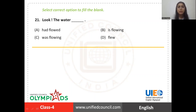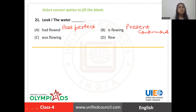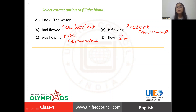Question number 21. The word of blank — we have to fill the blank with the right form of tense. The first option is 'had flowed', which is past perfect tense. Then we have 'is flowing', which is present continuous tense. Then 'was flowing', which is past continuous. And at last we have 'flew', which is the past tense of the verb 'flow' — simple past tense, or past indefinite tense.